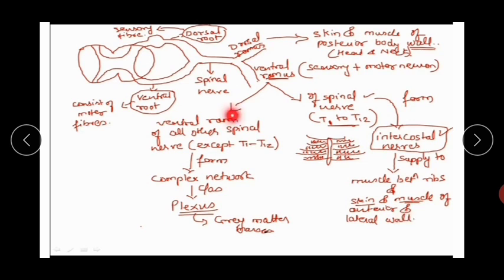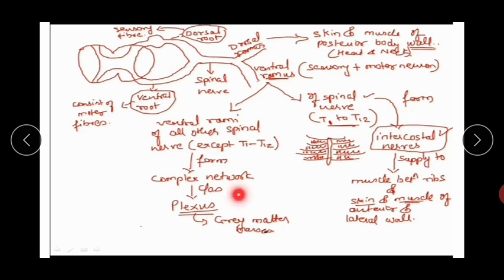The second part of the ventral ramus includes the cervical, lumbar, sacral, and coccygeal nerves. Unlike the thoracic nerves, these form complex networks called plexuses. A plexus is formed when many spinal nerves combine together to form an interconnected network.